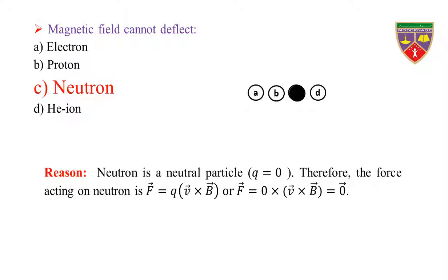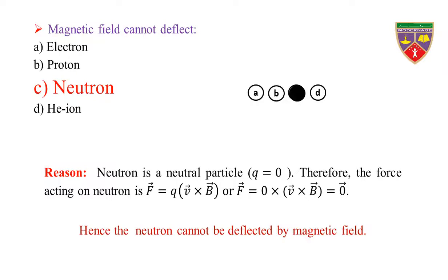Reason: Neutron is a neutral particle. Q is equal to zero. Therefore, the force acting on neutron is F = Q × (V × B) = 0 × (V × B) = 0. Hence, the neutron cannot be deflected by a magnetic field.